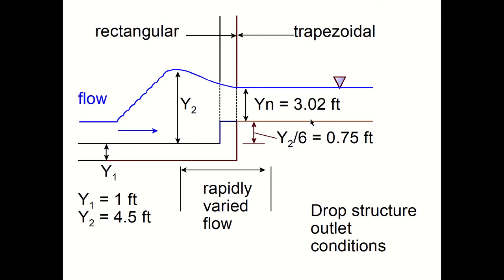The normal depth is 3.02 feet. The height of the step, Y2 over 6, would be 0.75 feet, and Y1, the depth of flow right before the hydraulic jump, would be 1 foot. These would be the expected drop structure outlet conditions.